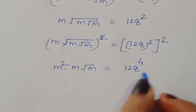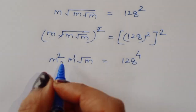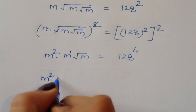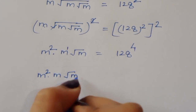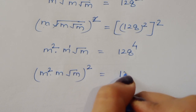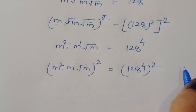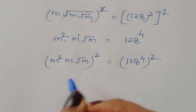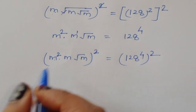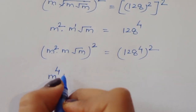Now this is m power — sorry, one more time we are taking square. Then we will get m squared times m times square root of m, the whole square, is equal to 128 to the power 4, squared. So m squared times m squared gives m to the power 4, times m squared.